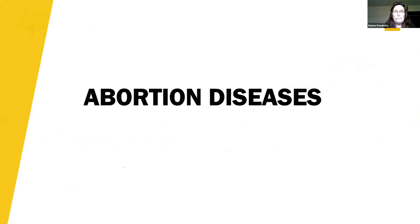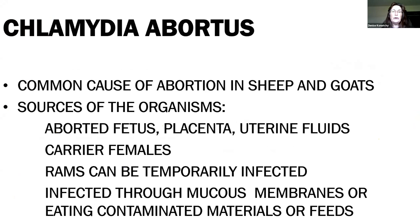Chlamydia is a common organism that causes abortion in both sheep and goats. Chlamydia is an interesting bacteria in that it's an intracellular bacteria, which makes it a little more difficult to treat because of that nature. Sources of infection are those birthing tissues, the fetus, the placenta, and uterine fluids.